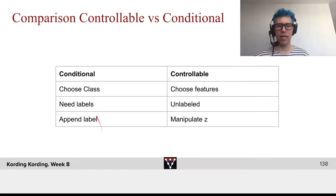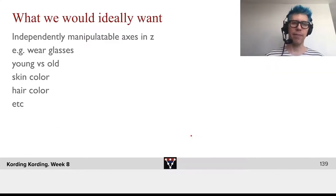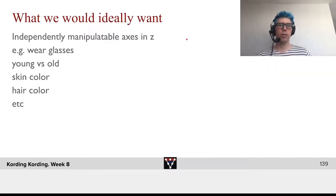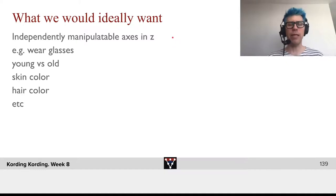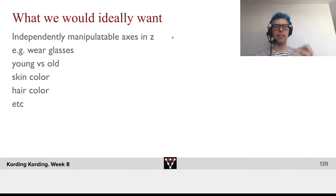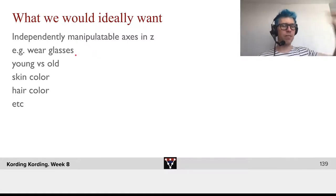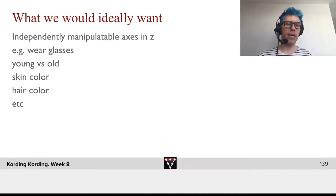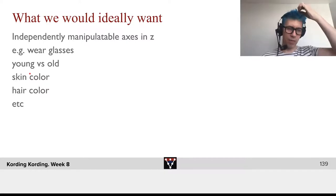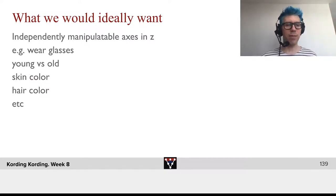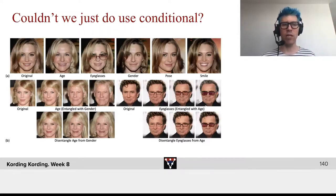In this case, we can append labels where we might want to manipulate Z. What would we ideally want? We would ideally want independently manipulatable axes in Z where you can say this dimension, if it's one, means glasses; if it's zero, means no glasses. This dimension, if it's one, means you're really old; if it's zero, you're really young. Something with skin color, hair color, and so on. For example, we can make everyone's hair color blue, which would be very cool.